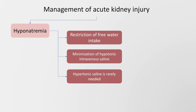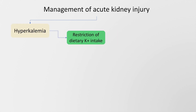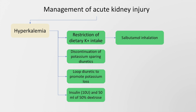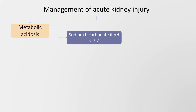Hypertonic saline is rarely needed in AKI-induced hyponatremia. Hyperkalemia may be managed with restriction of dietary potassium intake, discontinuation of potassium-sparing diuretics, and loop diuretics to promote potassium loss. Insulin 10 units along with 50 ml of 50% dextrose is used to push potassium into the cell. Salbutamol inhalation as beta-2 agonist therapy is also used, along with calcium gluconate to stabilize the myocardium. Metabolic acidosis is treated with sodium bicarbonate.